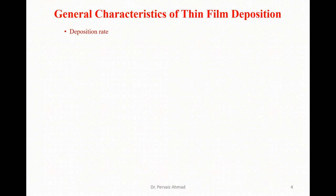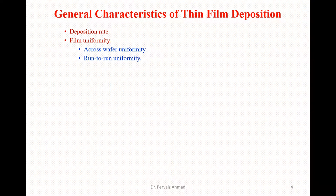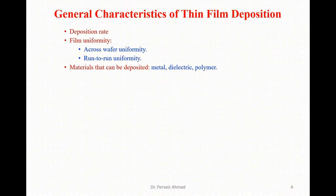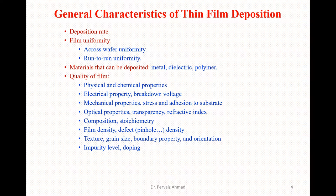General characteristics of thin film deposition include deposition rate, film uniformity across the wafer, and run-to-run uniformity. Materials that can be deposited include metals, dielectrics, or polymers. The quality of the film includes physical and chemical properties, electrical properties, mechanical properties such as stress and adhesion to the surface.